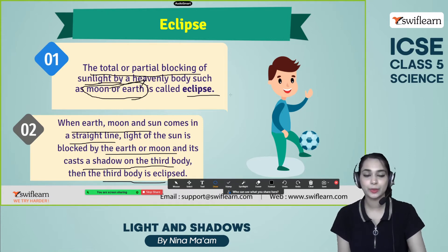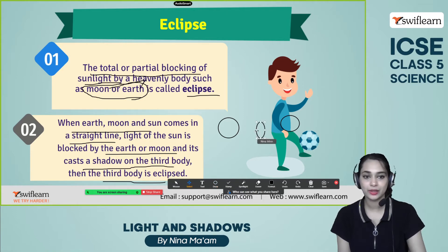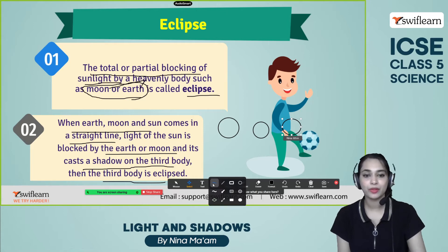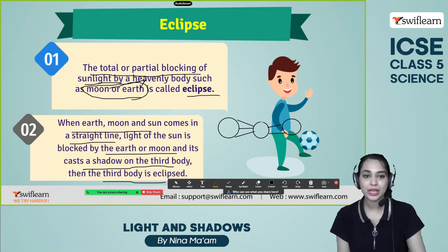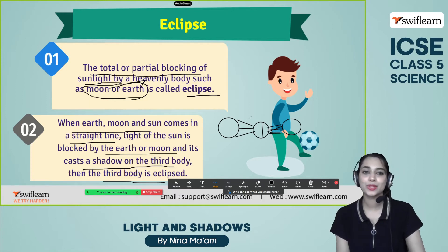Look at this diagram. Imagine this is the sun, this is the moon, and this is the earth — they are aligned in a straight line. What happens is the moon actually blocks the sunlight from reaching the earth. The sunlight comes but the moon is blocking it, and it cannot reach the earth. The moon is casting a shadow on the third body, which is the earth. That is also known as an eclipse.